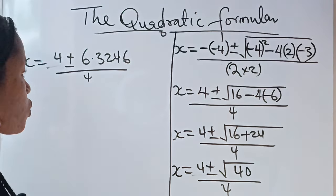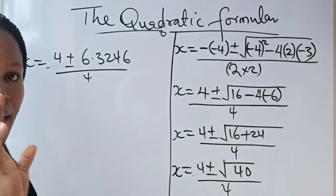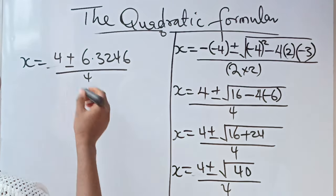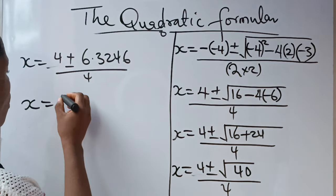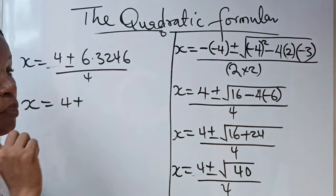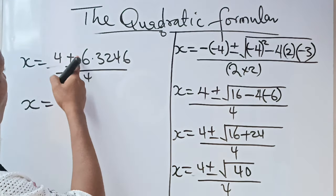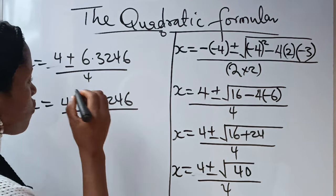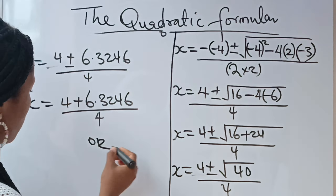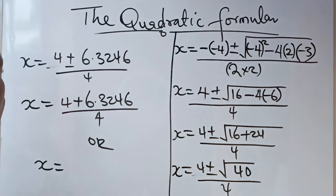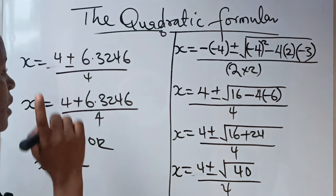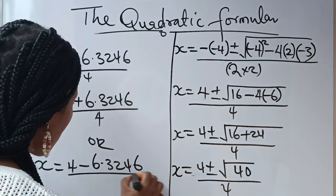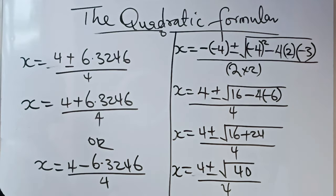Now, just look closely and see how I'm going to bring out the values of our x now. So, we have two values of our x inside this particular place now. The first value is that our x = 4 + 6.3246 divided by 4. This is the first one. Or, your x = 4 - 6.3246, everything divided by 4.